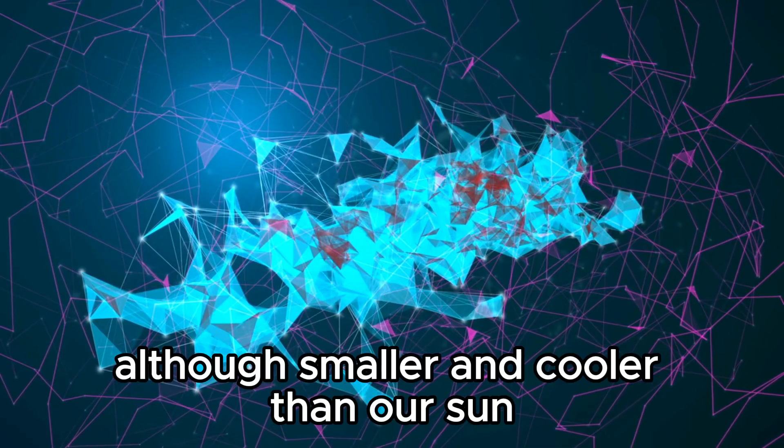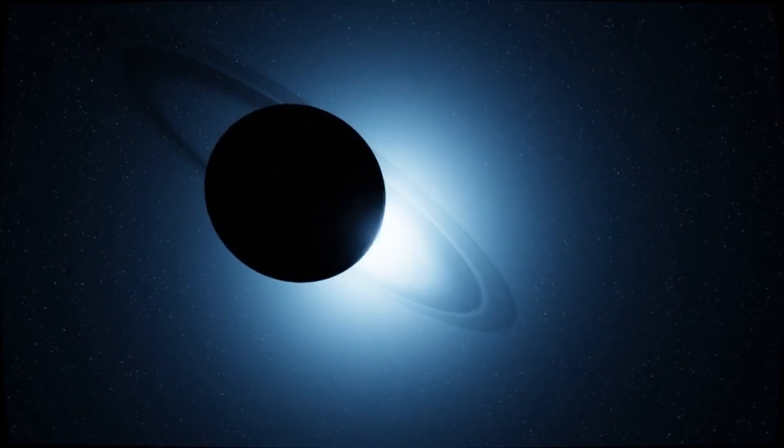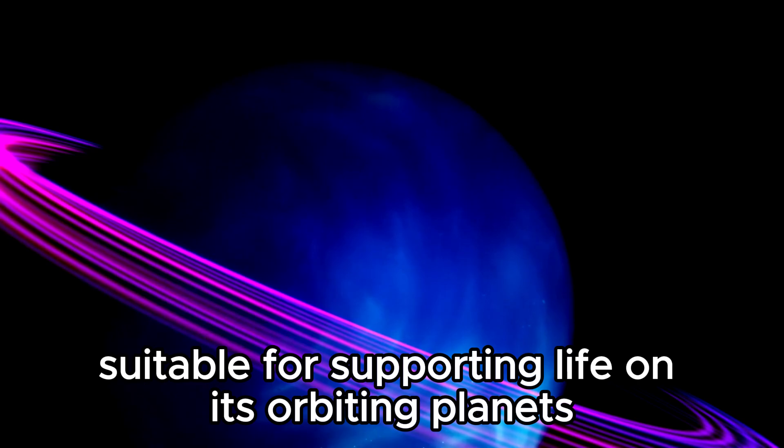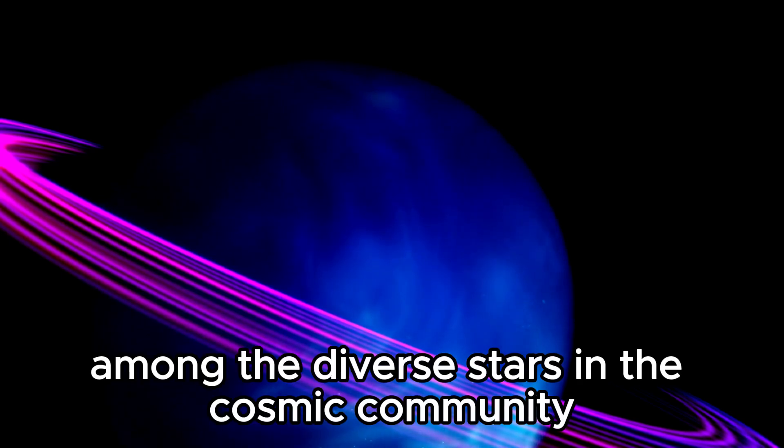This fascinating system, which includes a faint red dwarf star and seven Earth-sized rocky planets, orbits the tranquil red dwarf star. Three of these known planets are identified as habitable and potentially have water on their surfaces.